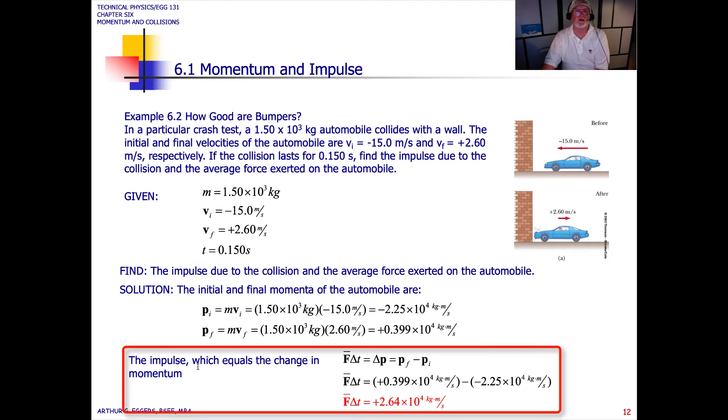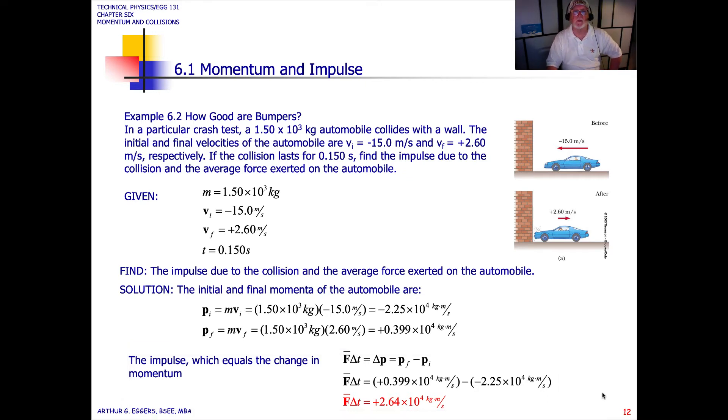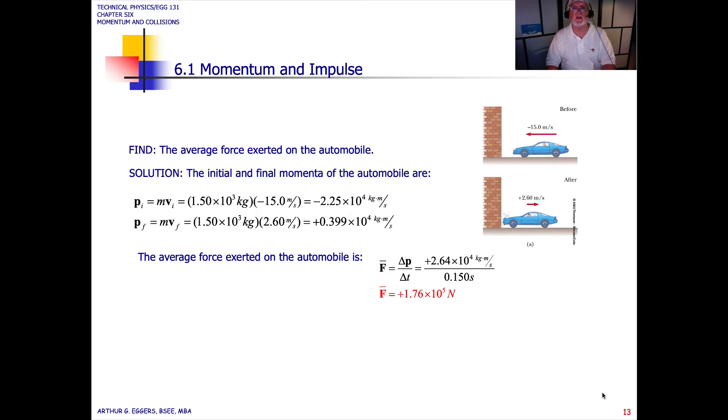Now we can calculate the impulse, which equals the change in the momentum. We go back to our average force times our interval, our delta T. Again, it couldn't be any simpler. We just take our two values, minus 2.25 times 10 to the fourth kilogram meters per second and combine it with plus 0.399 times 10 to the fourth kilogram meters per second. We come up with an impulse momentum of 2.64 times 10 to the fourth kilograms meters per second. This is not as difficult. We haven't gotten into the vector portions of this, but we certainly have gotten into the boundary value problems, initial and final.